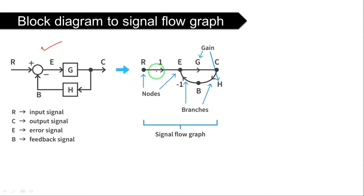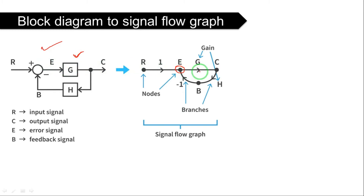In place of nodes or junctions, we have to maintain the nodes. See here — from the input signal there is a summing point which combines the input signal and the feedback signal. So it forms a node. This node has two inputs: the input signal R and the feedback signal H. After that there is a gain block, and we have to replace this gain block with a single line — a branch — with gain value G.